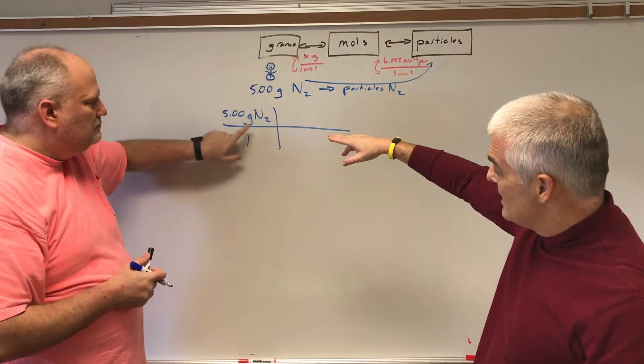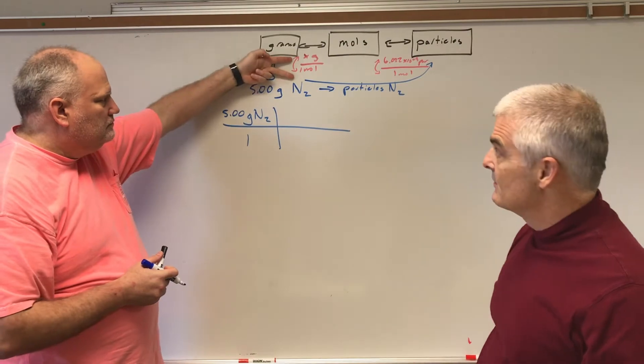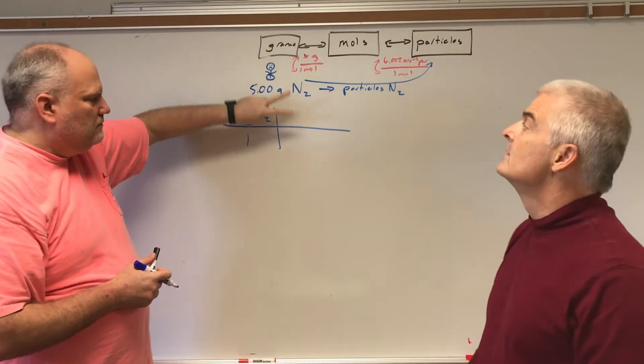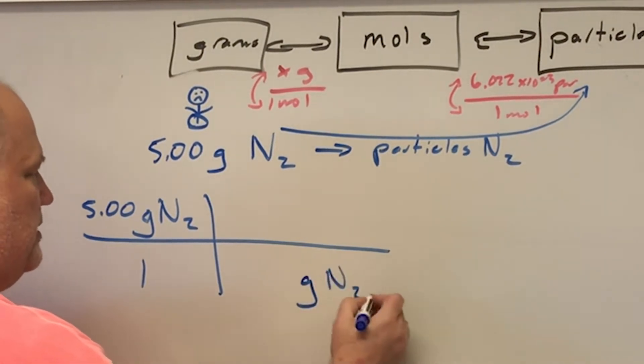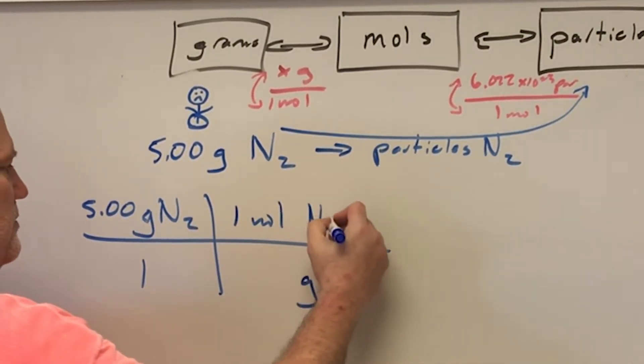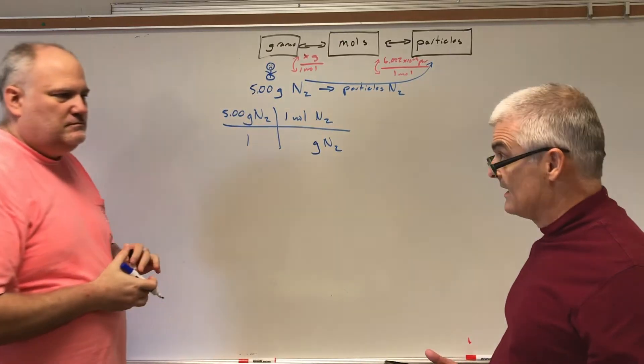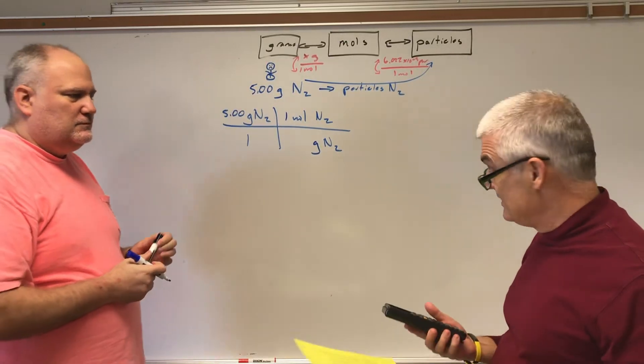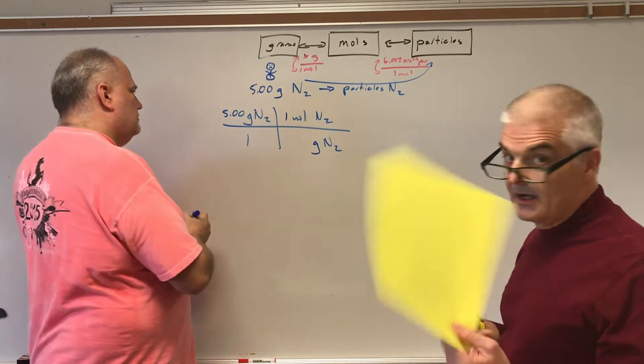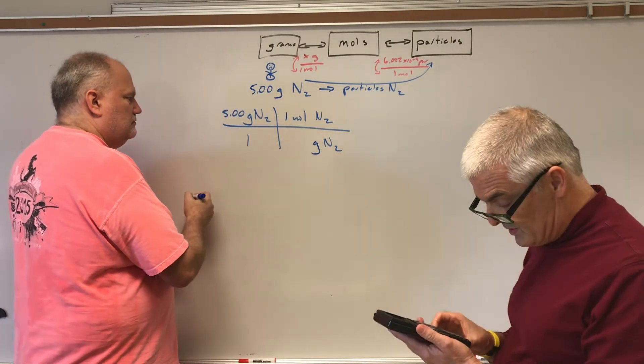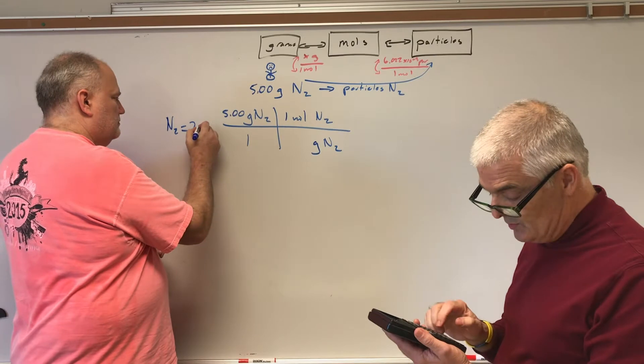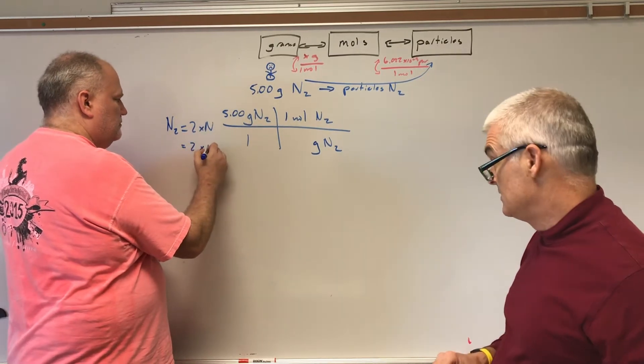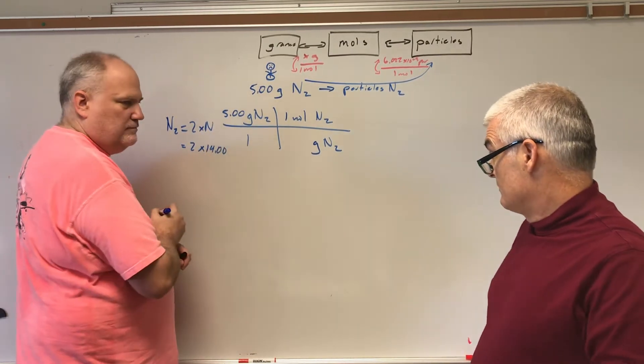Notice we've got grams on top there, and we've got grams on top in the fraction. That doesn't work. So we're going to flip it. We're going to have grams of N2 right here, and we're going to have one mole of N2 on the top. Now we have to find that answer from the periodic table. N2 is 14.007, so we double that number and get 28.014.